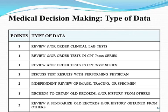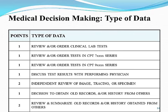Going back to the professional component — if you're billing for that professional component, you would not receive credit for independent review of image tracing or specimen. You could get credit for ordering it. For example, an orthopedist who orders an x-ray of the left shoulder and independently reviews the image but is not billing the professional component would receive credit for both the 70,000 series and the independent review. But you need to be very clear and concise if you independently reviewed it.